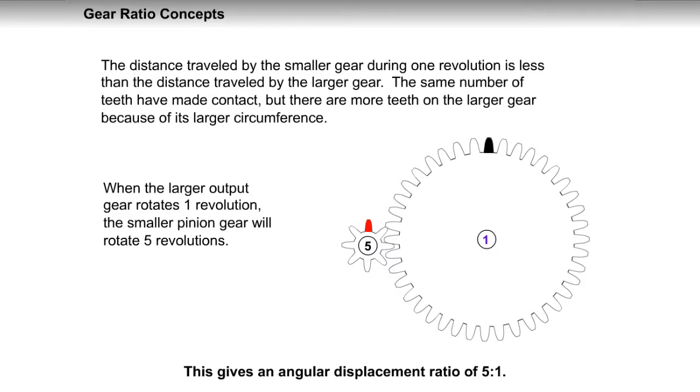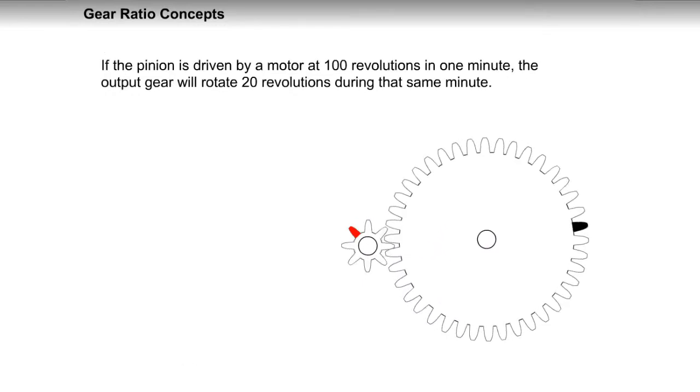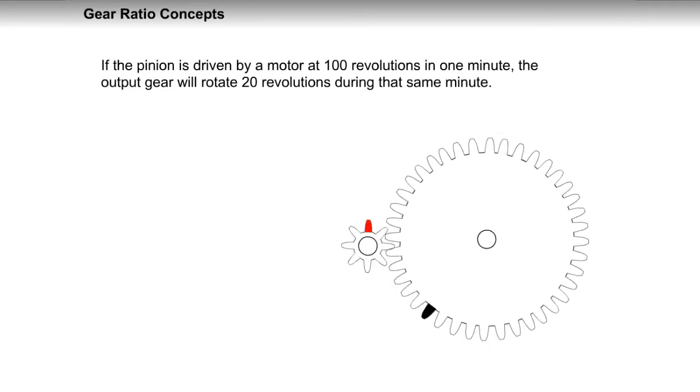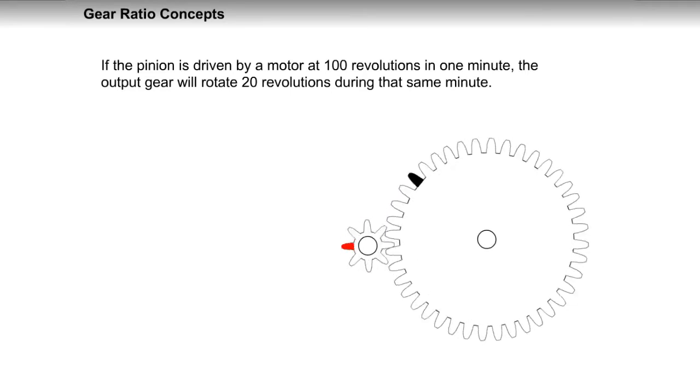If the pinion is driven by a motor at 100 revolutions in one minute, the output gear will rotate 20 revolutions during that same minute.